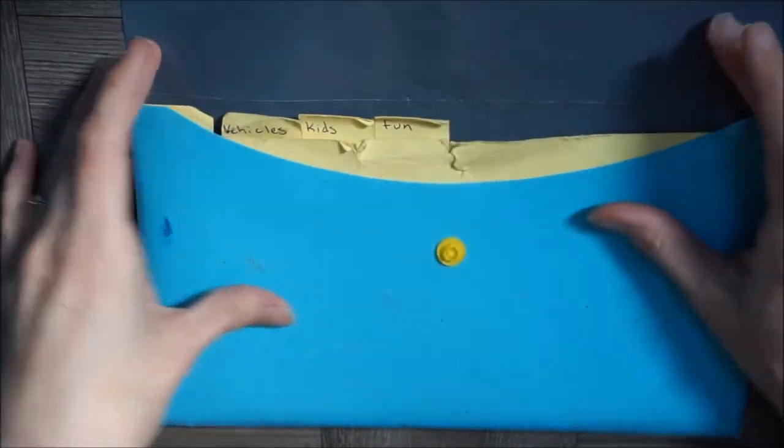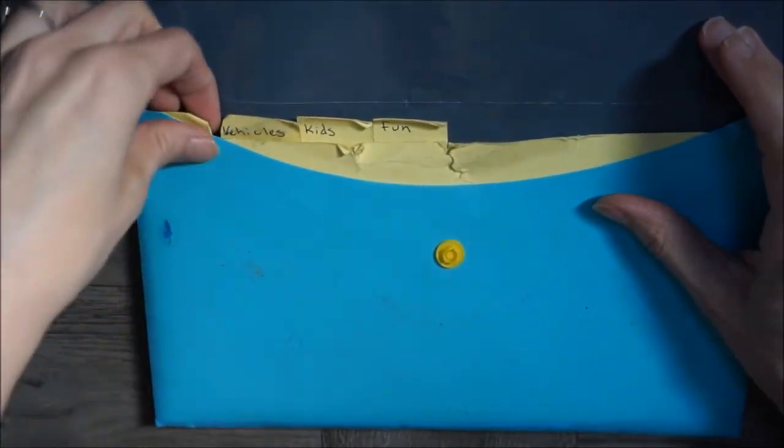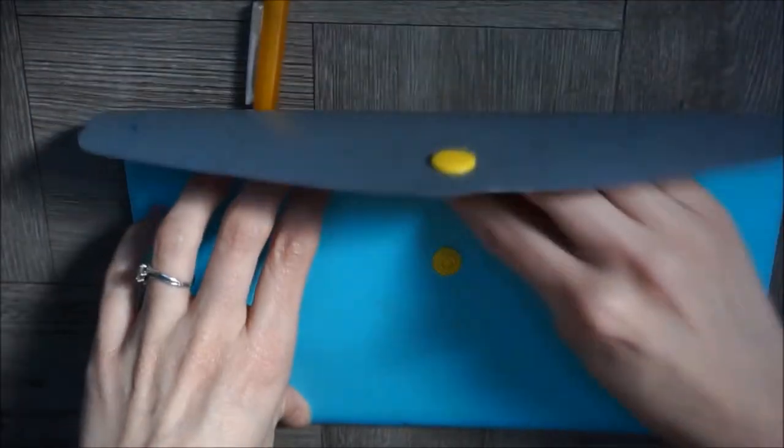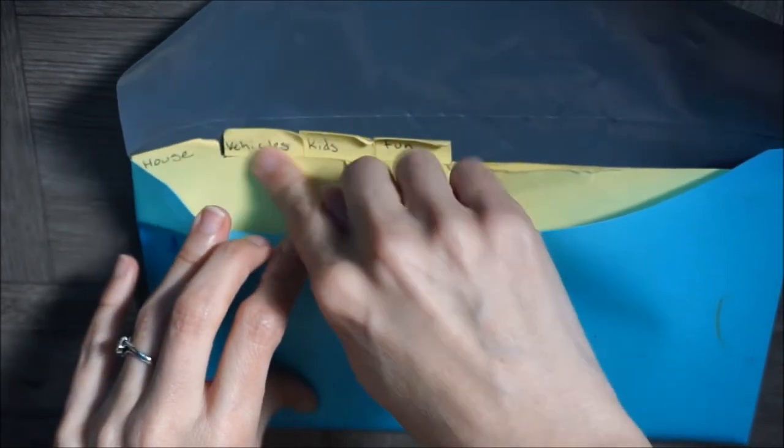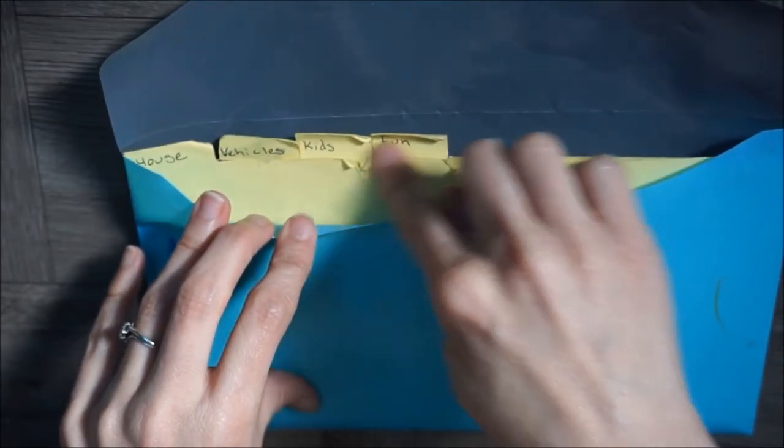And as you can see, this gets quite a bit of wear, so I'll probably be making some new tabs eventually. But for now, the categories we have are household, vehicles, kids, and fun.